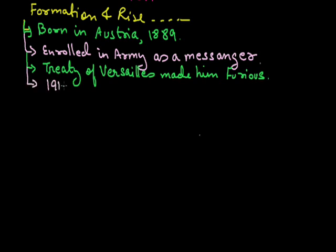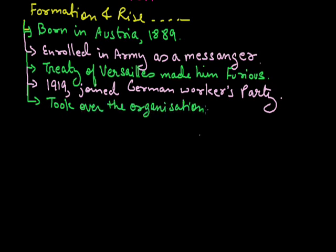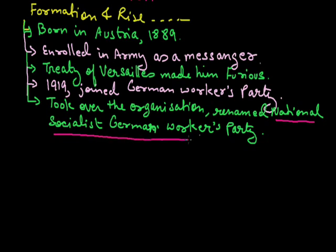In the year 1919, Hitler joined the German Workers' Party. But soon he took over the party and led it. Not only did he take over the organization, but he also renamed it as the German Workers' Party, and later this party became known as the Nazi Party.